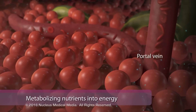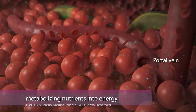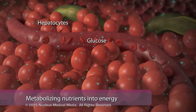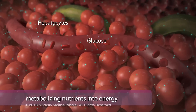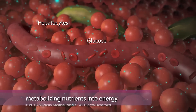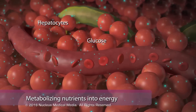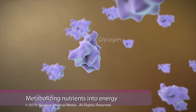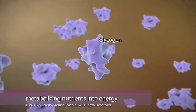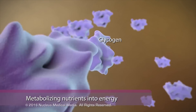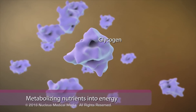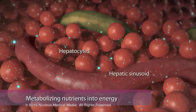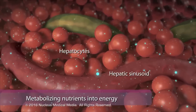Lobules process glucose, the sugar that is the main energy source for cells. Glucose from the digestive tract flows into the lobules, where hepatocytes, the primary cell type in the liver, store excess glucose as glycogen and distribute glucose to the body.